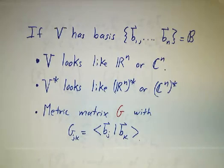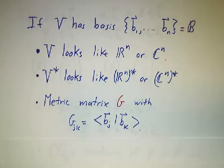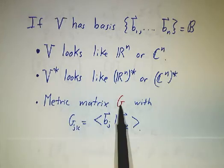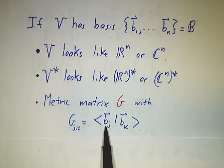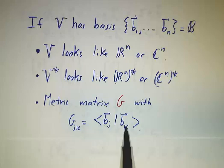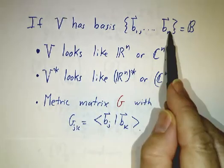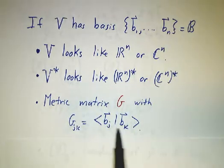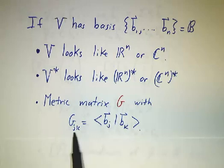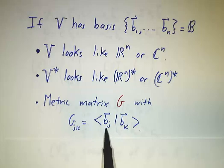The dual space is then going to look like a space of rows, and we're going to have a metric matrix. The metric matrix is obtained by taking the inner product of basis elements. We're using V with a basis b_1 through b_n, so the jk entry of the metric matrix is the inner product of the jth basis element with the kth basis element.